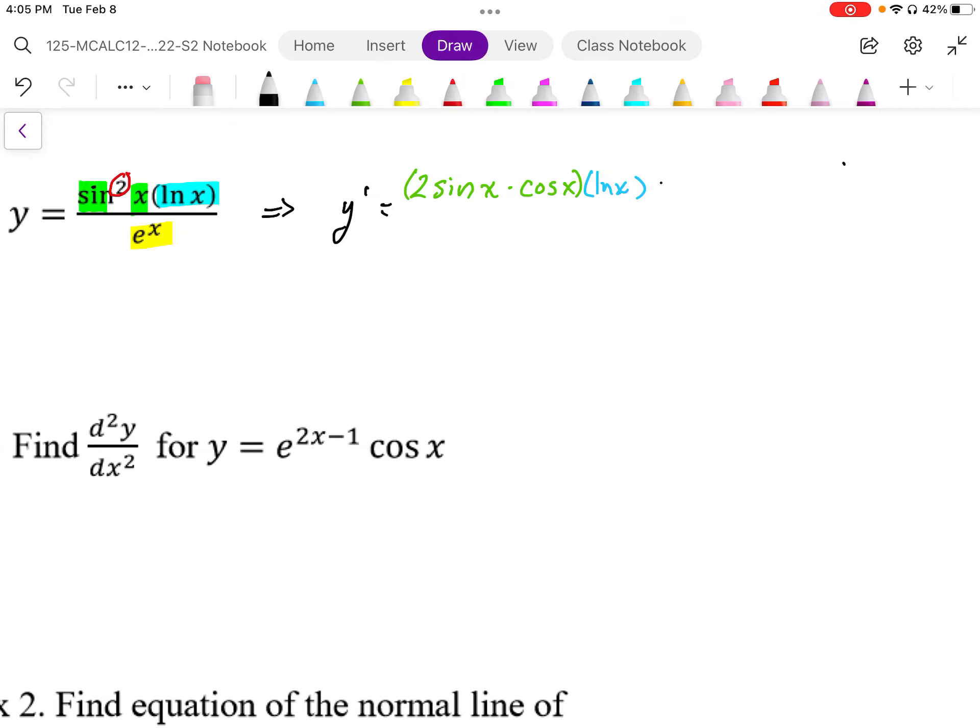The second part of this product rule, and I'm going to put this in square brackets here, the second part of the product rule is going to be, I'm going to leave the first term undifferentiated, and then I'm going to differentiate the second term 1 over x. So that completes the product rule part of this derivative.